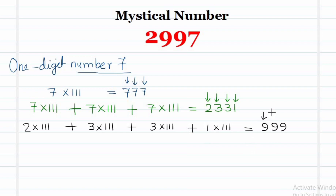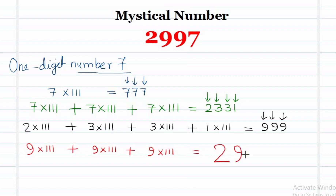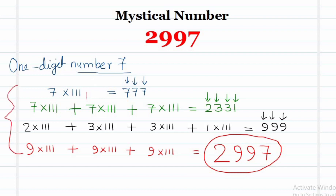What are the digits of 999? They are 9, 9, and 9 — all three digits are the same. Now we multiply these digits by 111 and add them up. We will surely get 2997, the required number. Note that 4 steps are required from the single digit number 7 to reach 2997.